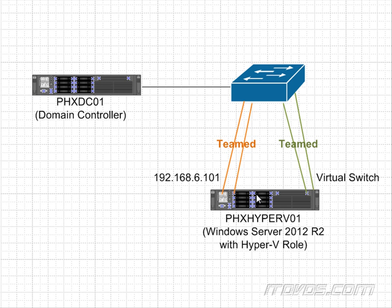Here's our standalone host. It's going to be called PHX Hyper-V01. It's a Windows Server 2012 R2 server with the Hyper-V role. We're going to have a domain controller, so we're going to make this host part of a domain. And here we have two network connections that we're going to team and give an IP address.